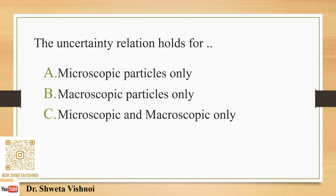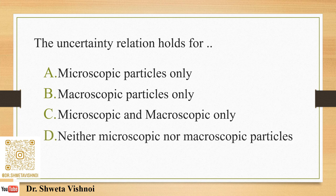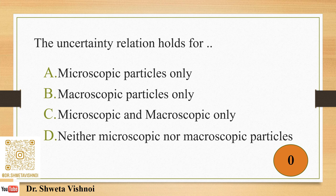The uncertainty relation holds for: (A) microscopic particles only, (B) macroscopic particles only, (C) microscopic and macroscopic particles, (D) neither. Time has started — this is a basic theory question. When the uncertainty principle is taught, experimental verification shows which bodies it applies to. The uncertainty relation holds for microscopic particles only. Correct answer: A.